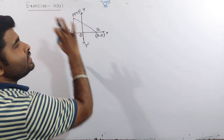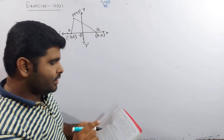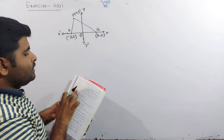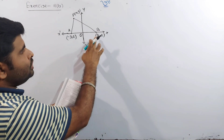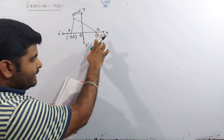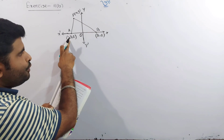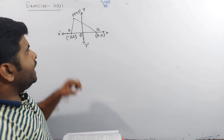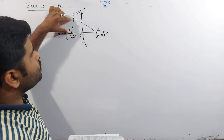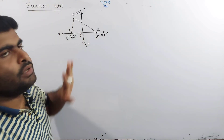PB is equal to 2 into PA. The distance is double PA, meaning PB = 2PA.